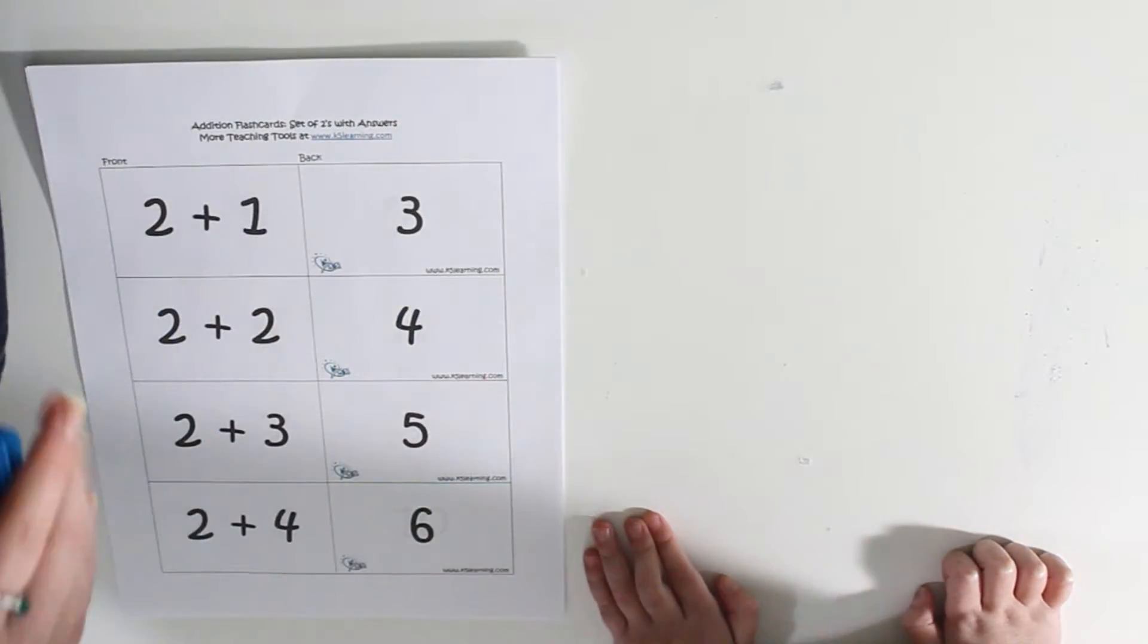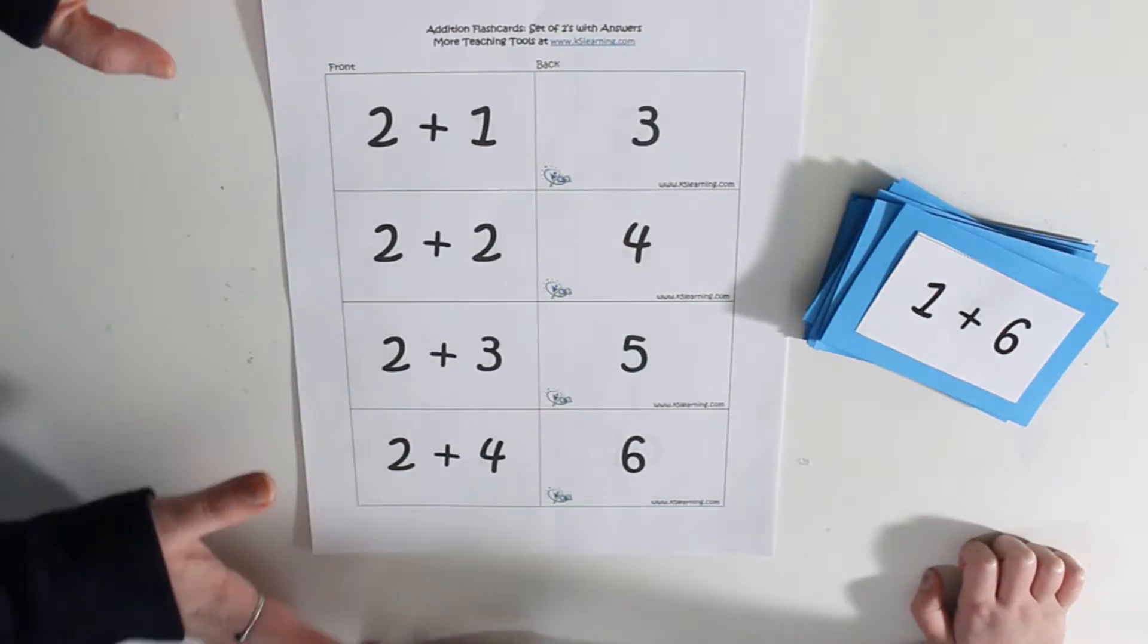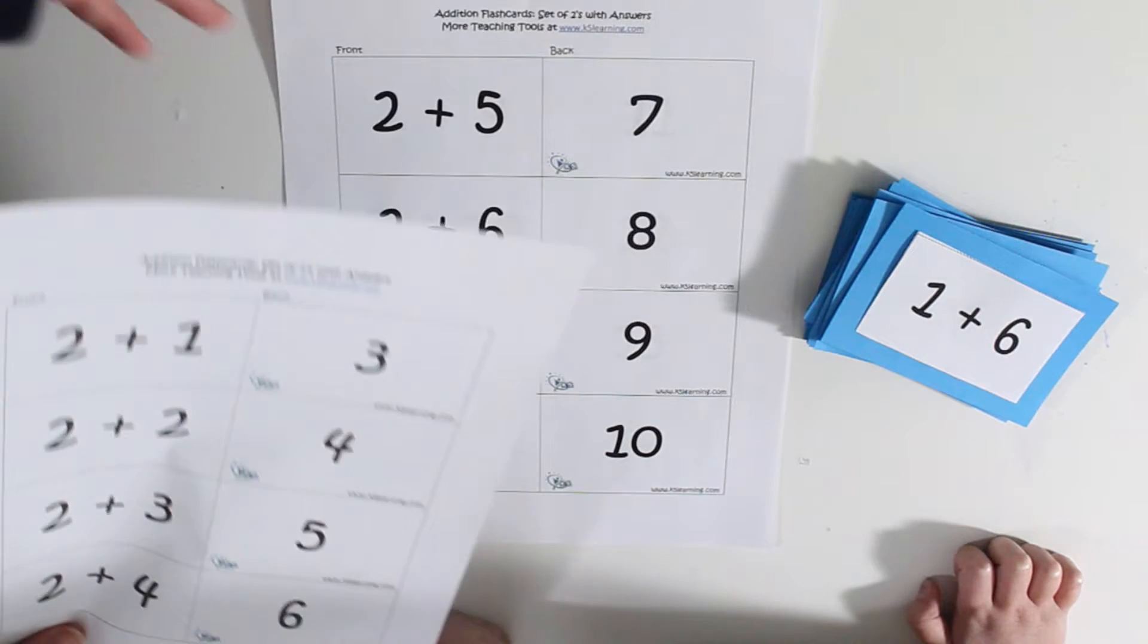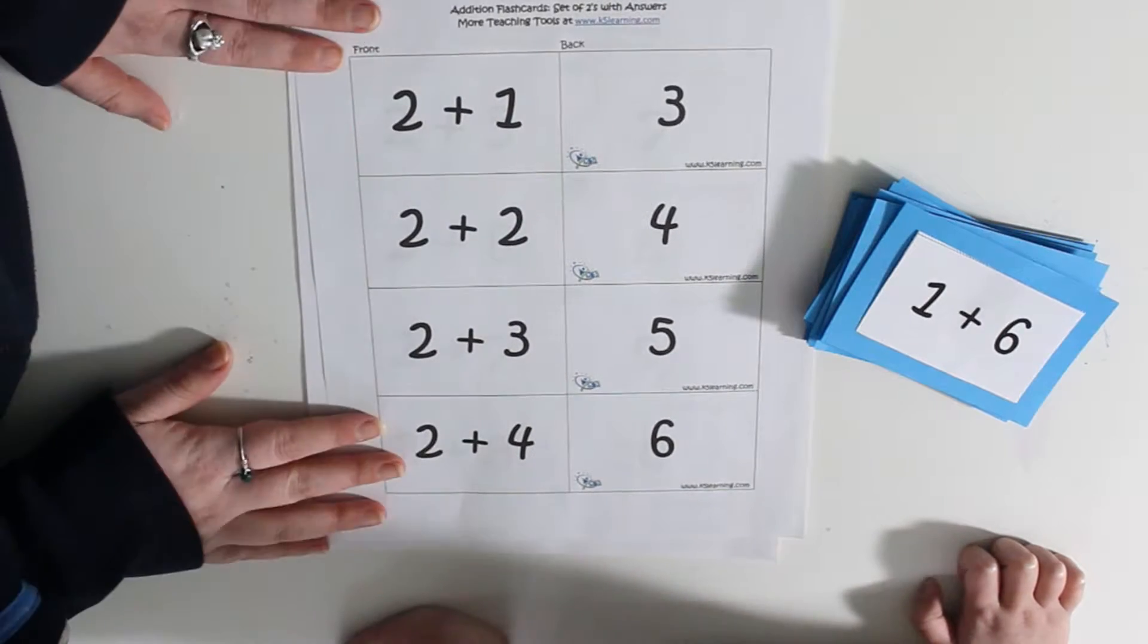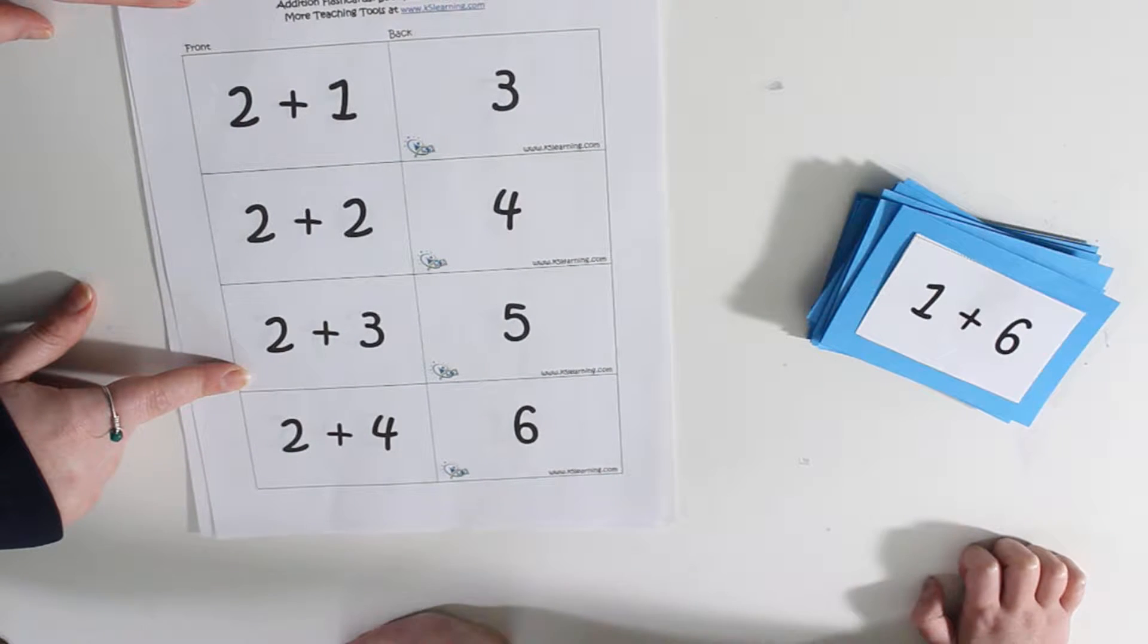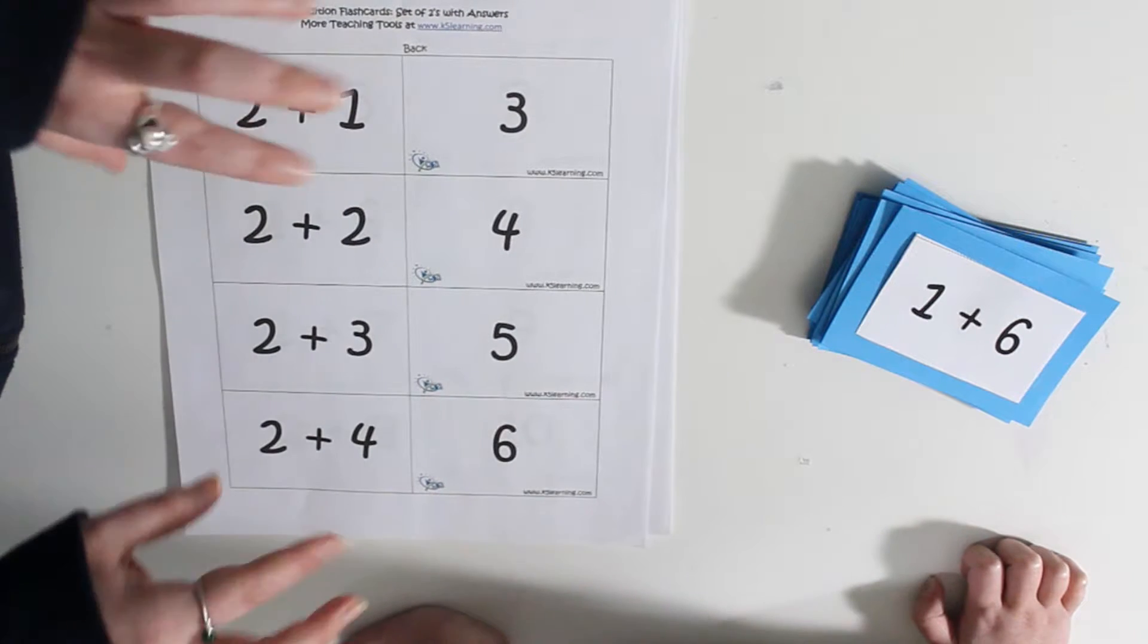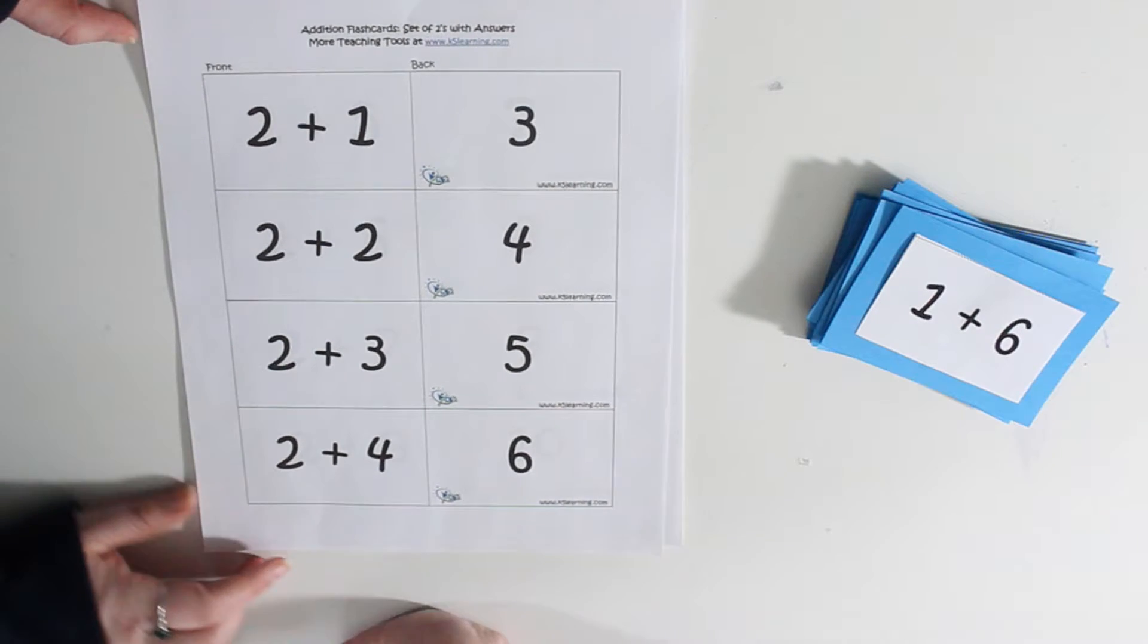So I actually got these sets of cards from a random website that I googled. I will leave a link to it down below. It has lots of free flash cards that you can print out and cut out. And that's what we're going to do. So we already did the one plus, now we're going to do the two plus, right? And this is done in a lot of the same way that we made your spelling and reading flash cards. I will leave a card pop up to that.